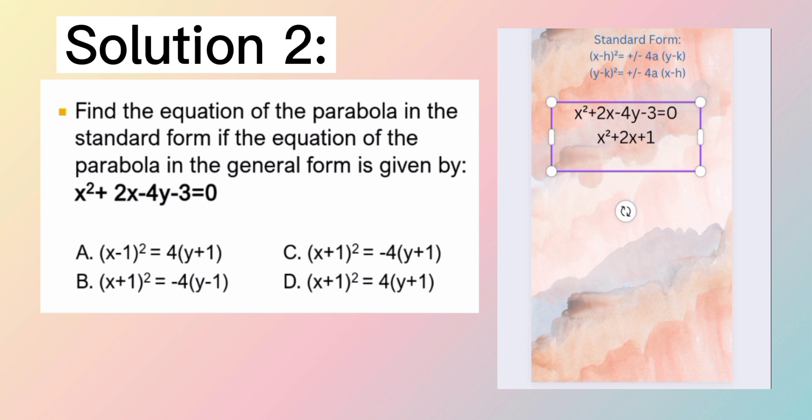Then, diba yung y natin ay nasa kanan? Equals sign. Transpose. Change the sign convention. Si negative 4y ay magiging 4y and plus 3 naman si negative 3. But wait. We added 1 sa left side. Therefore, mag-a-add din tayo sa right side.